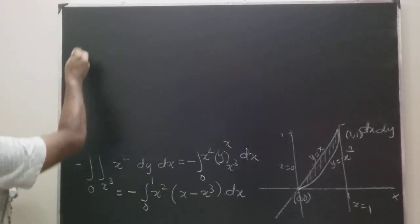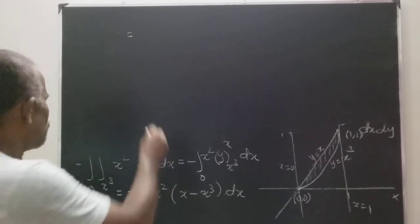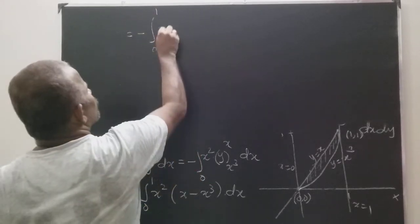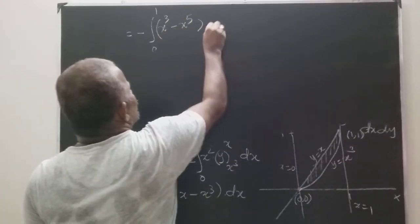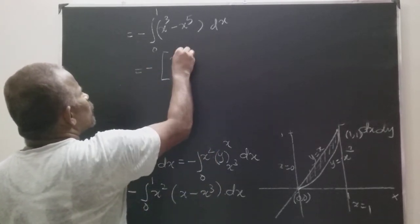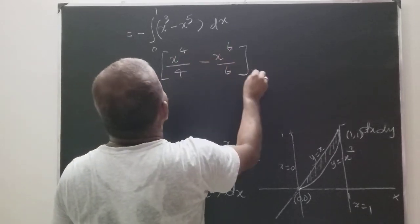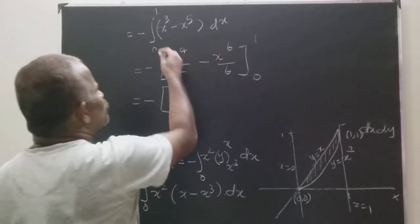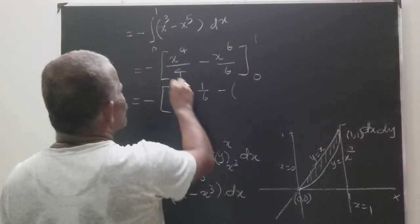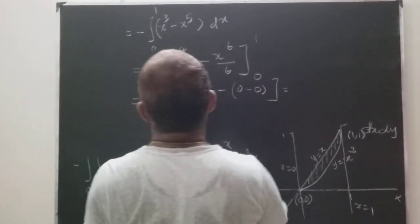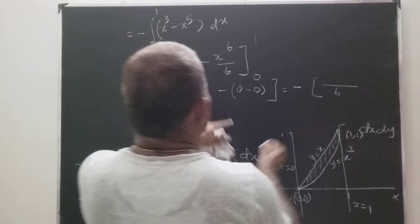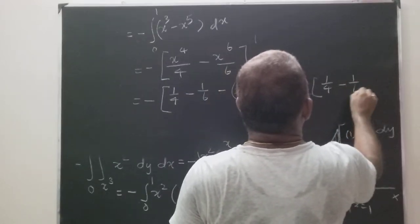Therefore this equals minus one-half times the integral from 0 to 1 of (x cubed minus x to the fifth) dx. Integrating: x cubed gives x to the fourth over 4, and x to the fifth gives x to the sixth over 6. Evaluating from 0 to 1 gives minus one-half times (1/4 minus 1/6). Taking LCM 12: that is 3/12 minus 2/12 equals 1/12. So the result is minus 1/2 times 1/12 equals minus 1/12.